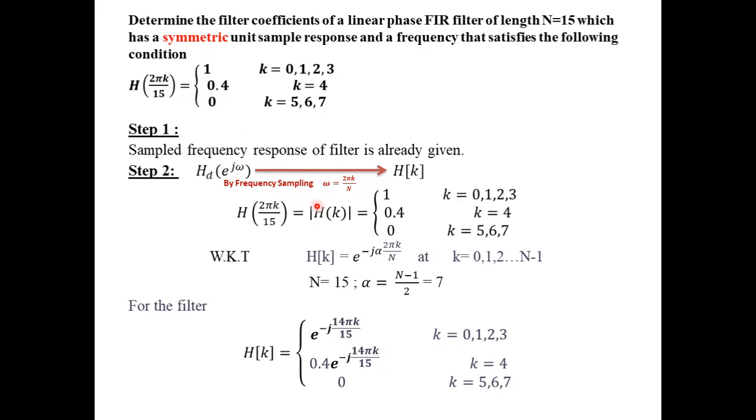The magnitude of the sampled value is given as 1, 0.4 and 0. So it is given and we know that from the magnitude we can find what is the h of k. So h of k is e power minus j alpha into 2πk divided by n. h of k which involves both the magnitude as well as phase is given as in the place of 1 we can write it as e power minus j alpha into 2πk divided by n. So substituting for value of alpha 7 we get 14πk by 15 for k equal to 0, 1, 2, 3.